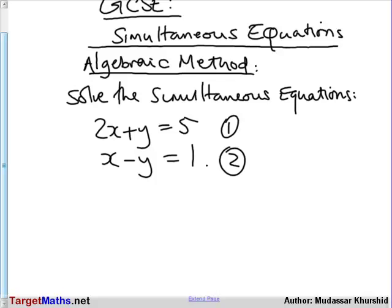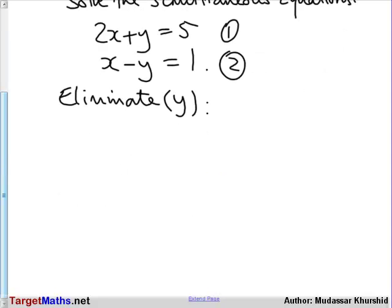The best one to eliminate in this case is y. To do that, if we have a look at what y is in both equations: in the first equation, y is positive; in the second equation, y is negative. So there is one y in each equation, and if we add the two equations, y plus minus y will equal 0.